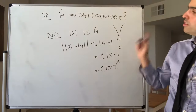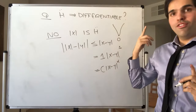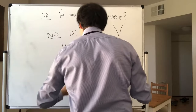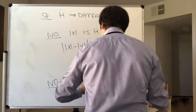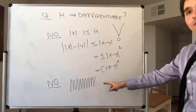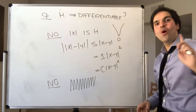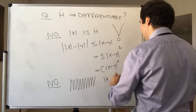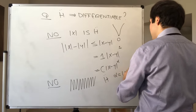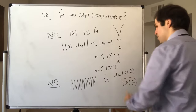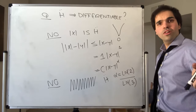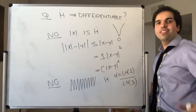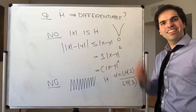Even worse: there's this function that is differentiable nowhere — I think it's called the Weierstrass function — it kind of looks like a sawtooth function. It turns out that even though it's differentiable nowhere, it is Hölder continuous with constant α equal to ln(2) over ln(3). So Hölder continuity is better than plain continuity, but not quite the same as differentiability.